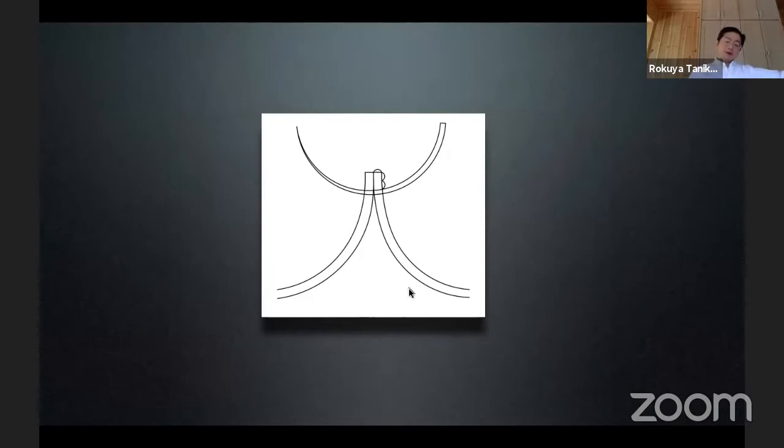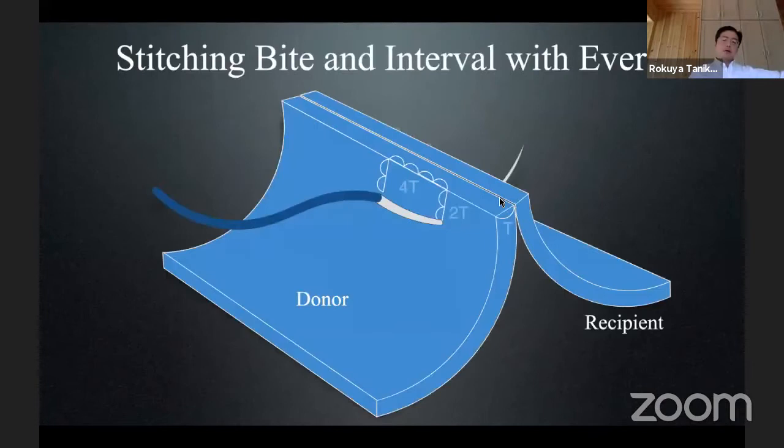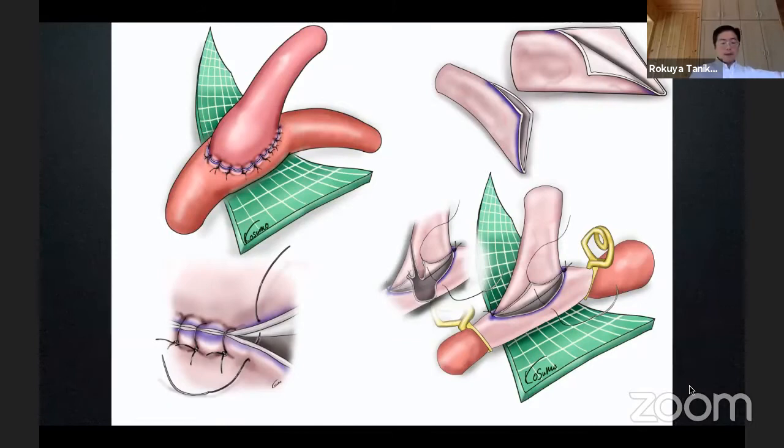Again, the everting — this is the principle of micro-anastomosis. The stitching bite should be twice the wall thickness, and the stitching interval should be four times the wall thickness. This is the principle. This is an example drawing by my colleague Kosmonoda — a very beautiful illustration.